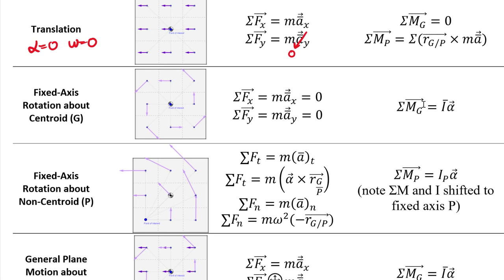For fixed-axis rotation about the centroid: if the centroid is a pin that is not accelerating, sum of forces in x and y equal zero. Summing moments about the centroid gives I-bar times alpha, where alpha is positive counterclockwise from the right-hand rule. For fixed-axis rotation about a non-centroidal point, the centroid has a rotational acceleration component — the tangential acceleration rewritten as alpha crossed into the position vector R of G relative to P, and the normal acceleration as negative omega squared times that R vector pointing back toward the center of curvature.